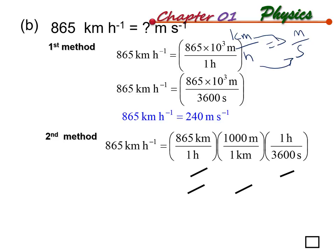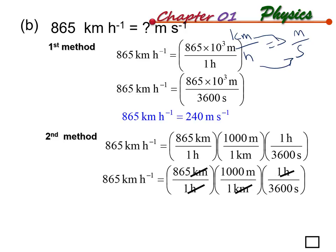Method 2 uses dimensional cancellation: multiply by 1000 meters over 1 kilometer, and multiply by 1 hour over 3600 seconds. The kilometer units cancel and the hour units cancel, leaving meters per second. Both methods give the final answer of 240 meters per second. Personally, Method 1 is more straightforward.